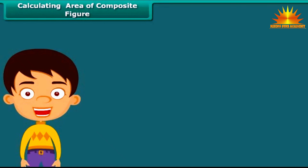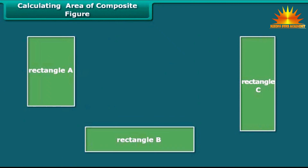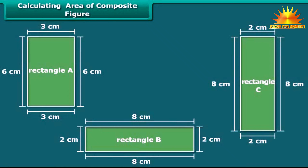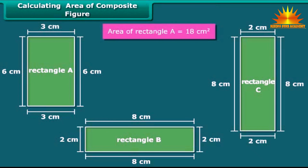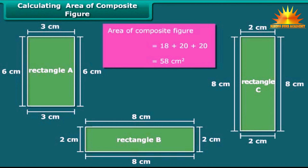Now let us calculate the area of a shape that is made up of multiple rectangles. First, break the composite figure into individual rectangles. Calculate the area of each rectangle. Sum up the areas of all the rectangles to find the area of the composite figure. Here we can divide the given composite figure into 3 rectangles. The area of rectangle A is 18 cm square. The areas of rectangles B and C are the same, that is 20 cm square each. Thus, the area of the composite figure is 18 plus 20 plus 20, which is equal to 58 cm square.